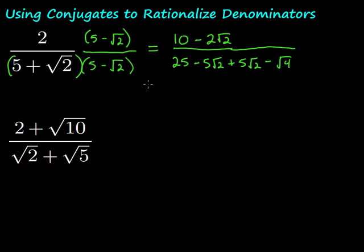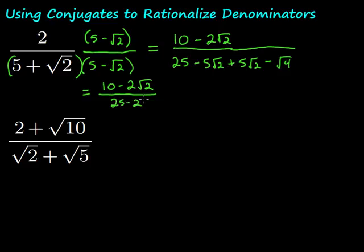We get rid of all the square root stuff in the denominator. On the top, we have 10 minus 2 square root of 2 — we can't simplify that further. On the bottom, those opposite terms cancel, and we get 25 minus 2, which gives us 23 on the bottom. So we have that whole expression over 23.